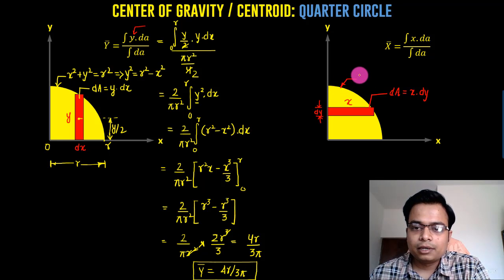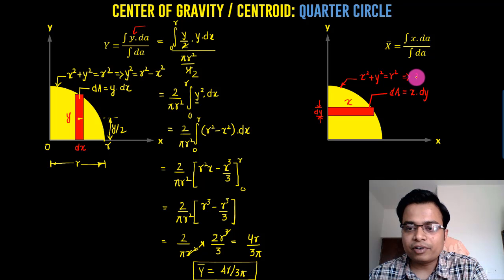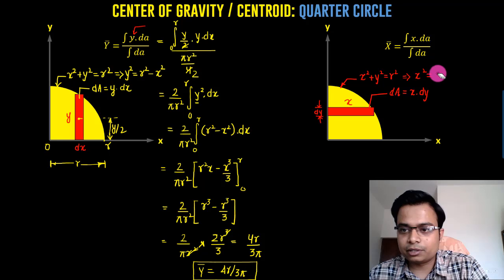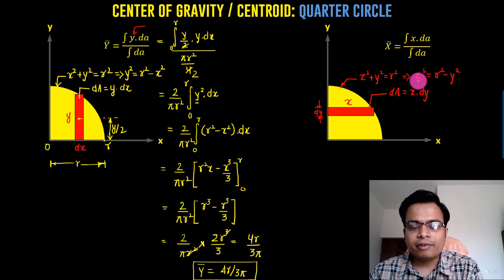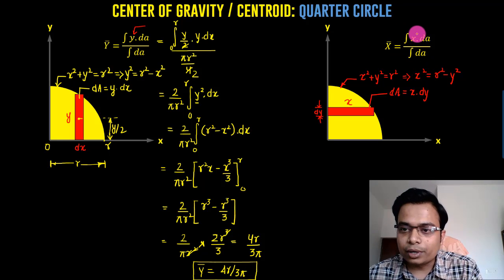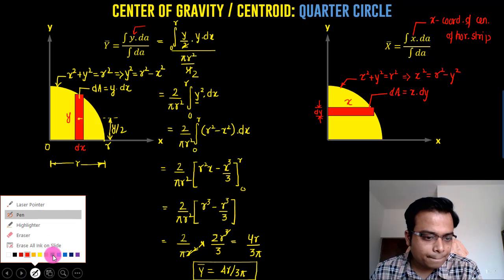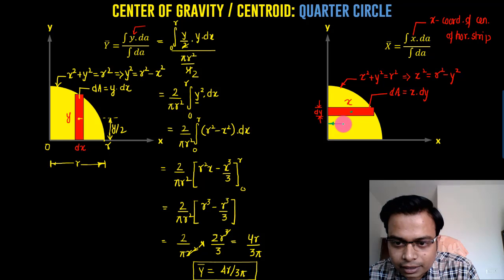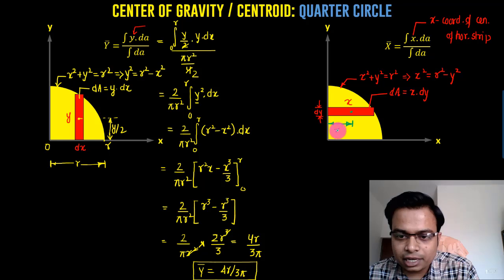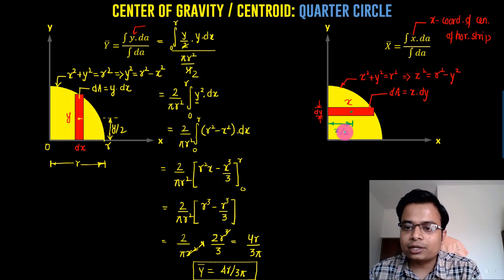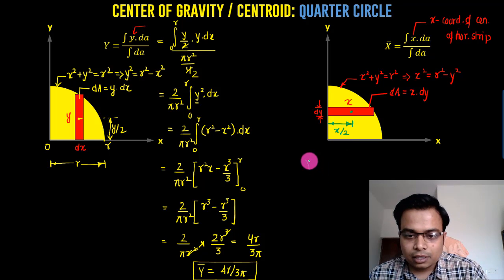The equation is x² + y² = r², so x² = r² − y². The horizontal strip has its centroid at x/2 from the y-axis. So in place of x (the moment arm), we write x/2. This is the x-coordinate of the centroid of the horizontal strip.